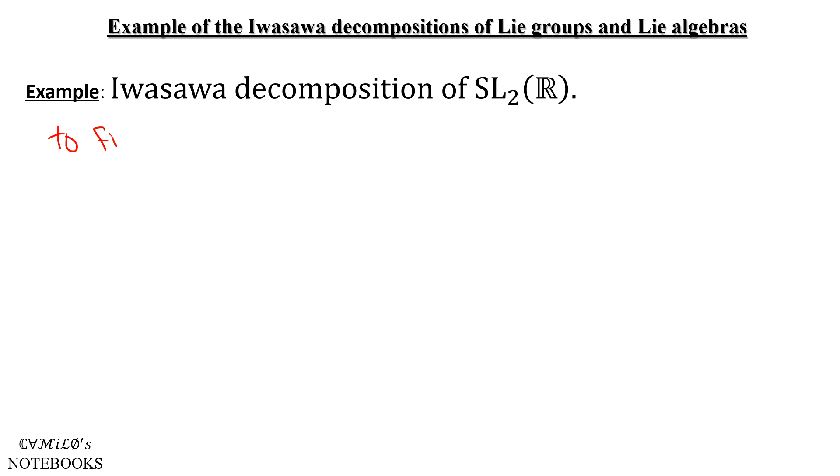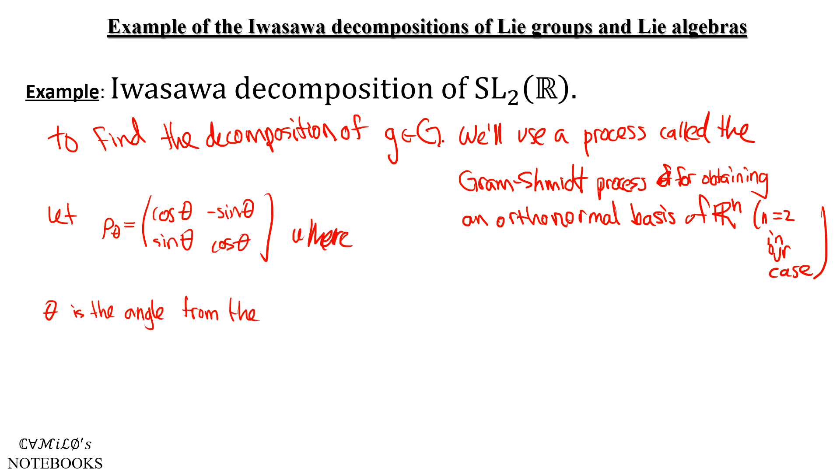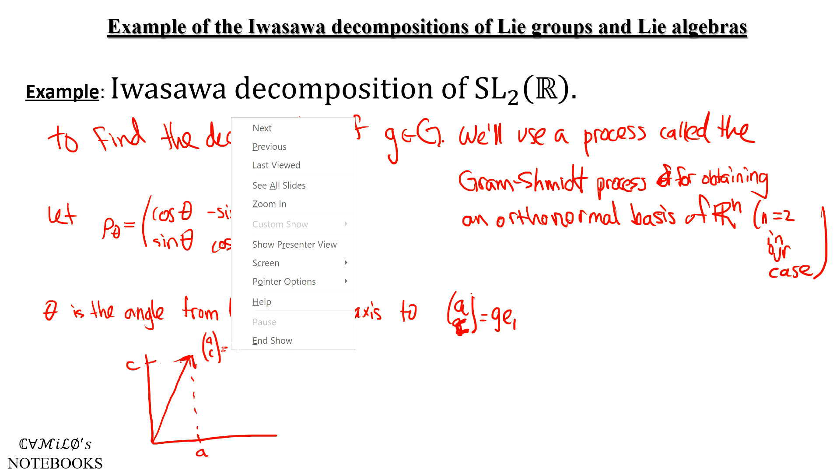So to find a decomposition, we'll use a process called the Gram-Schmidt orthogonalization process, where we turn any basis of ℝⁿ into another orthonormal basis of ℝⁿ. And n equals 2 in our case. Recall, the ρ_θ are these rotation matrices. And let θ be the specific one where θ is the angle from the positive x-axis to G times E₁, which is the vector (A,C). Now that makes an angle with the positive x-axis.